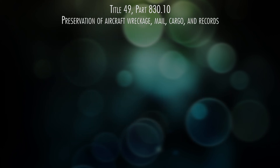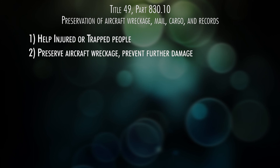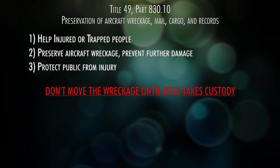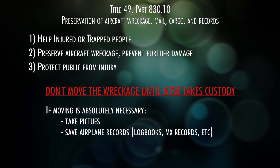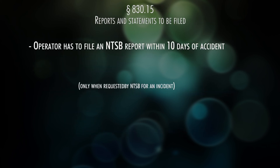If you're an operator of an airplane involved in an accident or incident, until the NTSB gets there, there are a couple things to be aware of. First, help people if they're injured or trapped. Your next priority is to protect the airplane from more damage, then to protect the public at large. The main thing is don't move anything until the NTSB gets there. If something does have to be moved, take pictures or preserve records of what happened so the NTSB has a better idea when they investigate. The operator has to file a report with the NTSB within 10 days after an accident.